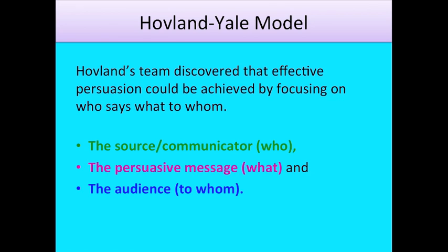The Hovland-Yale model is really easy. Basically, it's saying who says what to whom. So who is the source or the communicator? What is the persuasive message — what's in the advert and how should the message be put across? And who is the audience — who do they actually want to persuade?